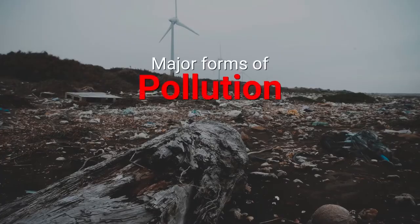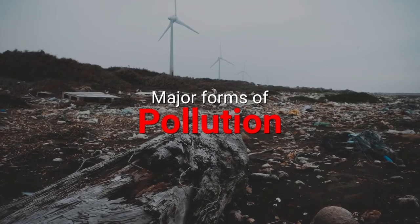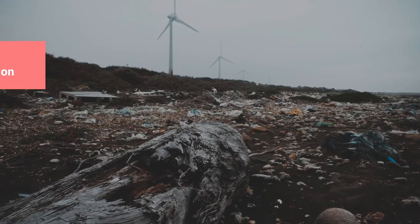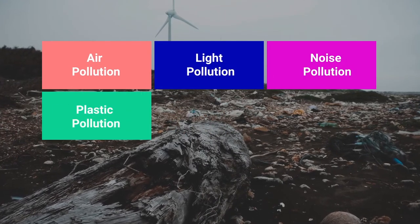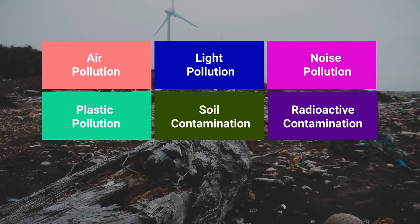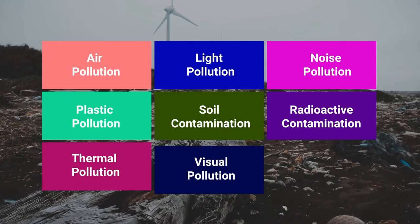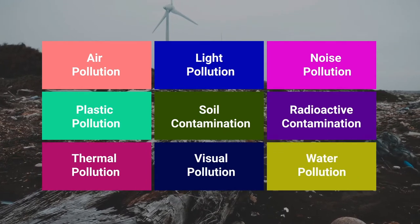Taking a cue from this definition, you ask your students to identify the main or common types of pollution. Ask them to list on the board one by one. They may list air pollution, light pollution, noise pollution, plastic pollution, soil contamination, radioactive contamination, thermal pollution, visual pollution, water pollution, and many more — this list is endless.